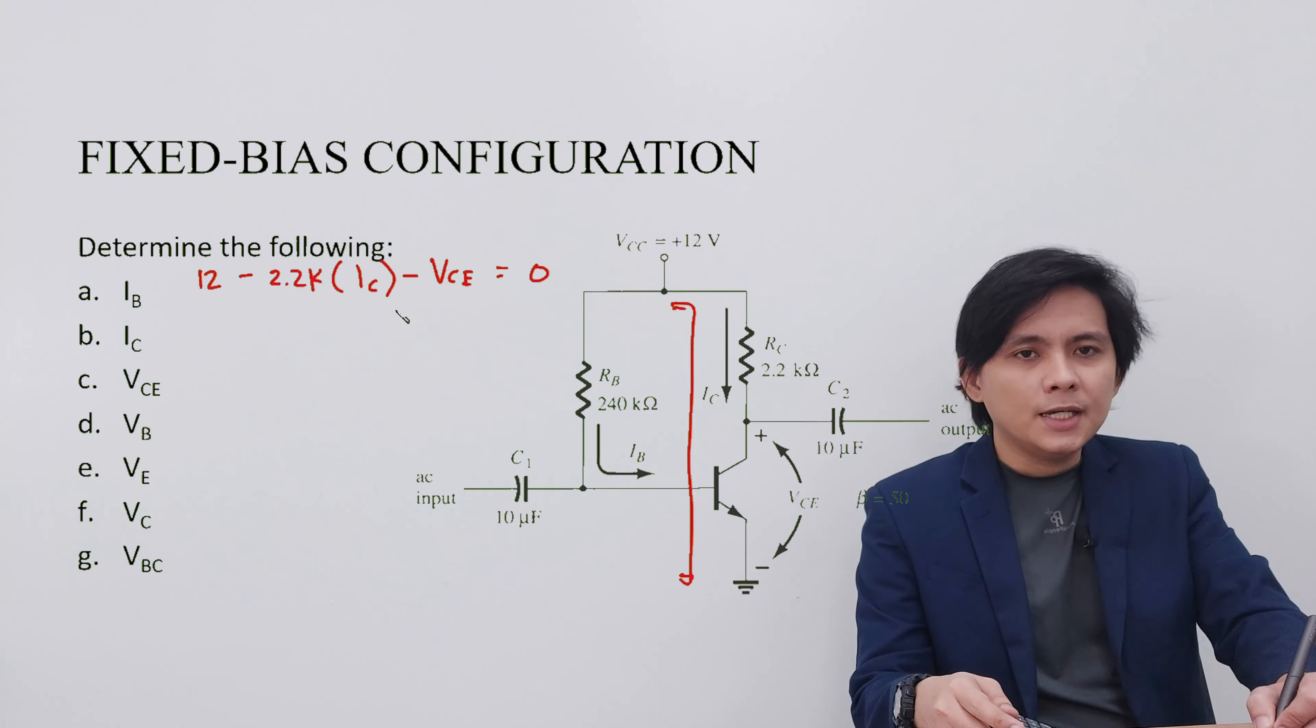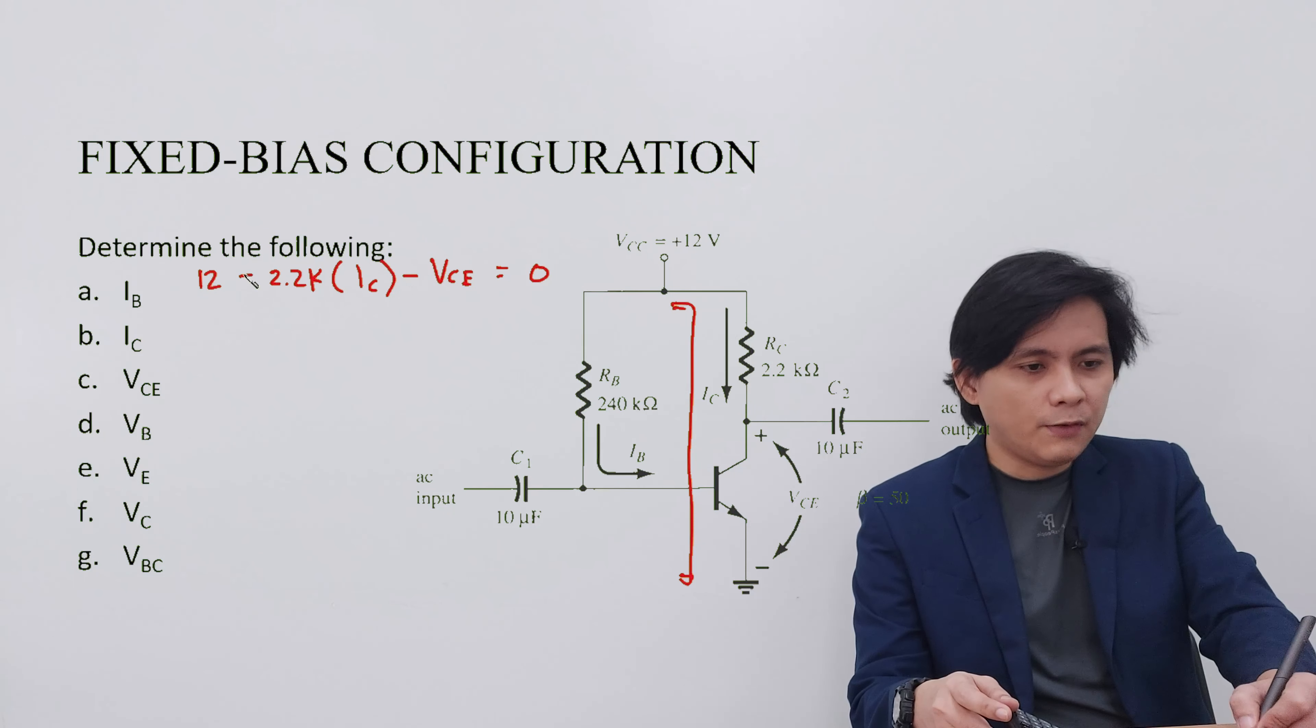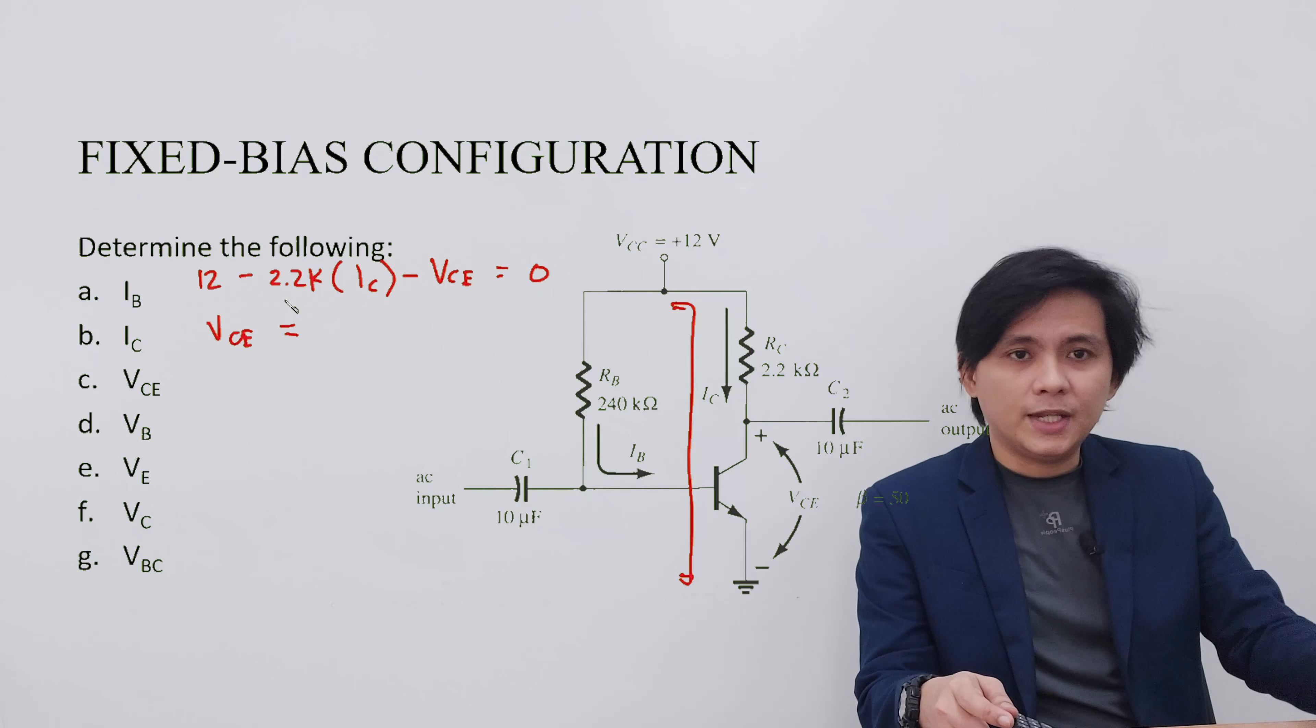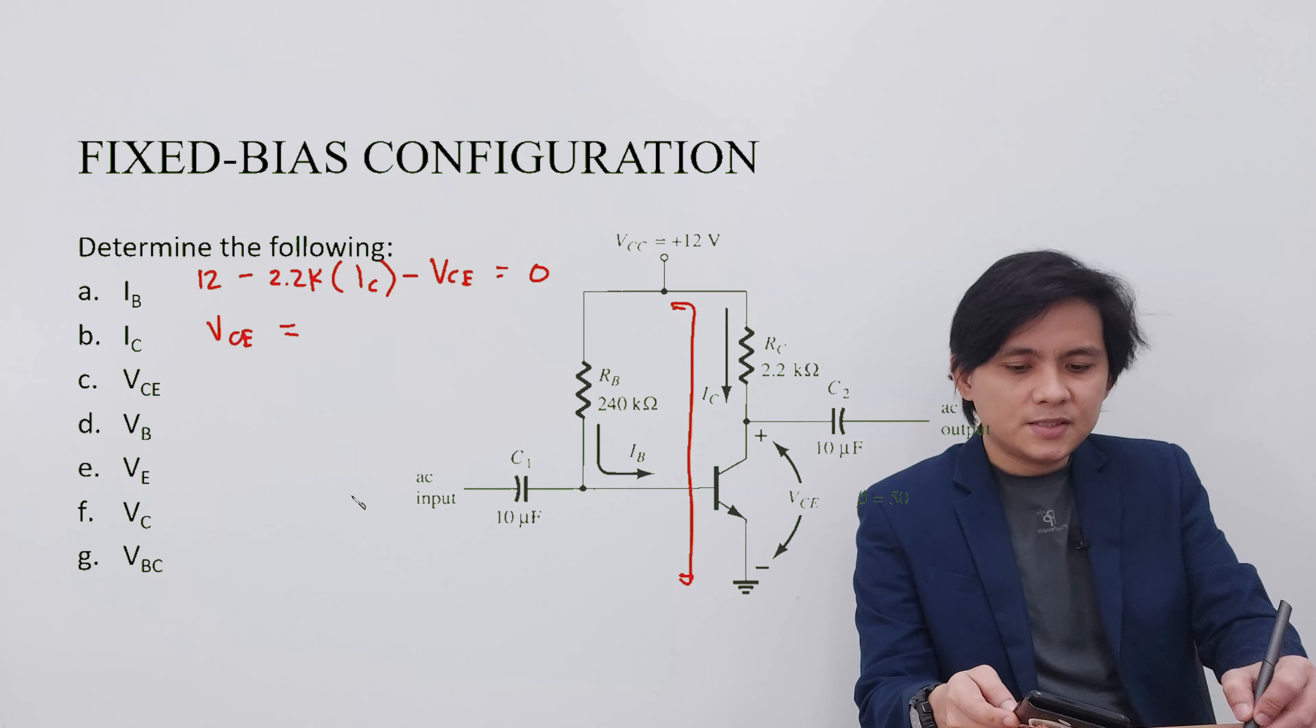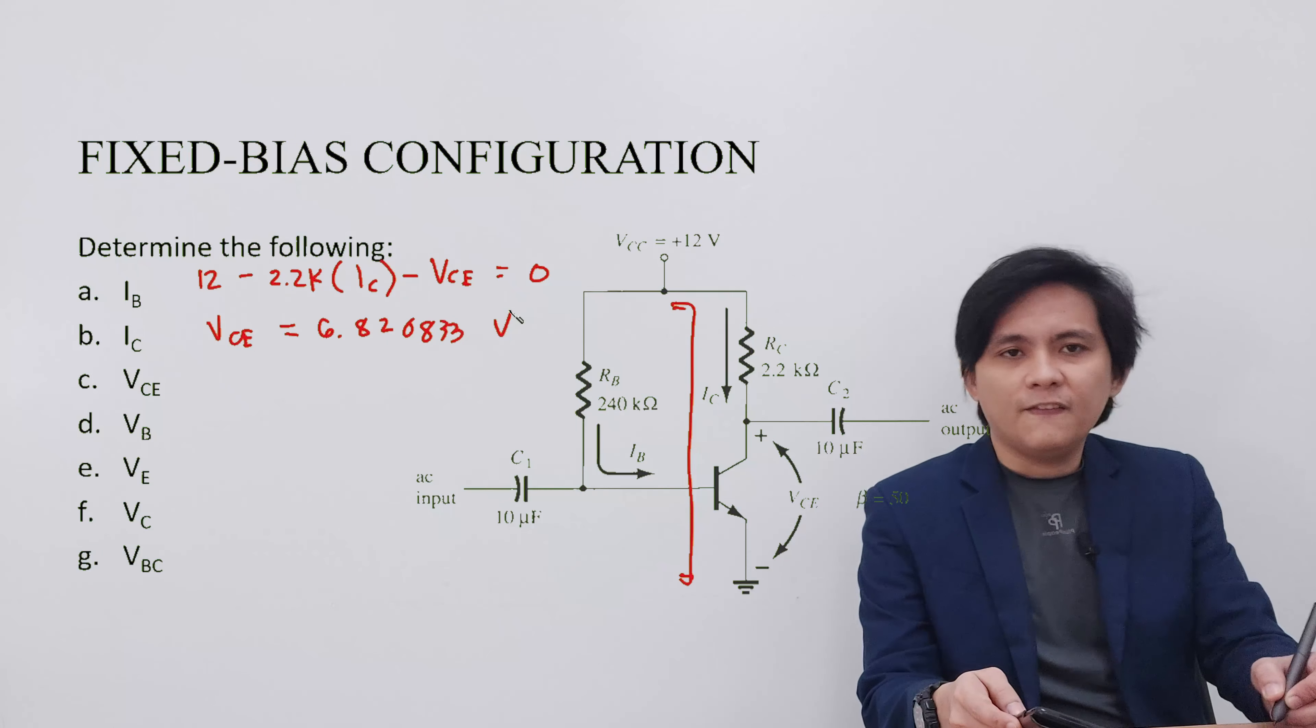IC is already known from the previous step. Therefore, our VCE is equivalent to 6.820833 volts.